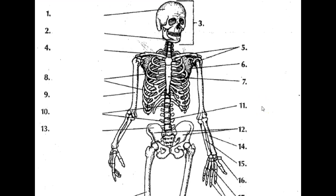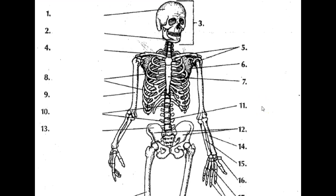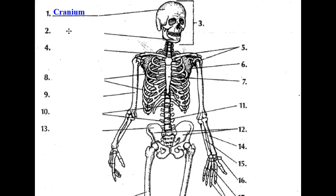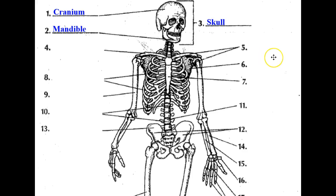We'll get started with structure one, which is the cranium — the common word is skull, but you'd use the word cranium. The mandible is the jaw. The mandible and the cranium together make up the skull.